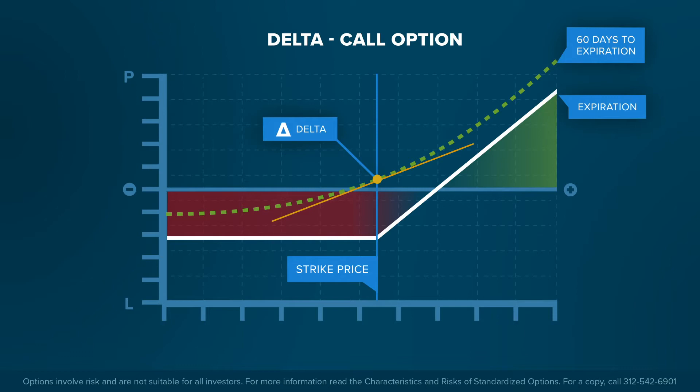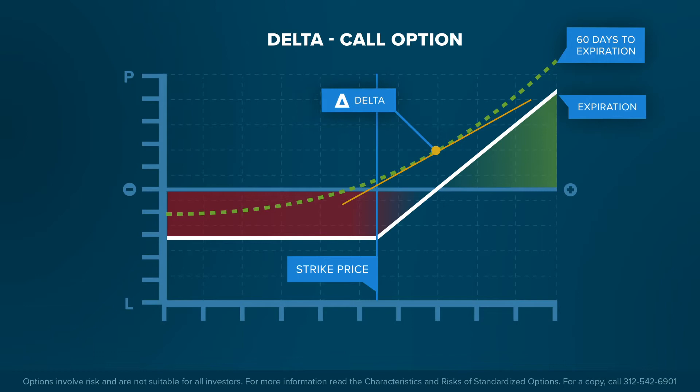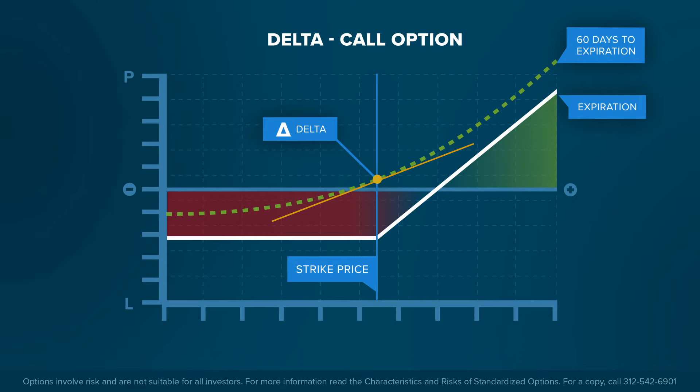For a call option, Delta will range from zero to one. As the price of the underlying asset increases beyond the strike price and gets further in the money, the Delta will increase and approach one, meaning there is a greater change to the price of the option relative to the change in price of the underlying asset. An at-the-money option generally has a Delta of approximately 0.5. Alternatively, Delta can be thought of as the probability that an option will finish in the money.